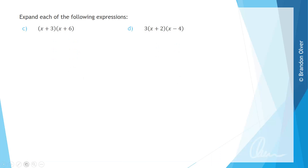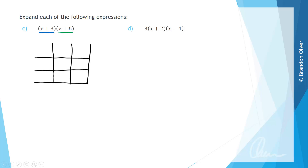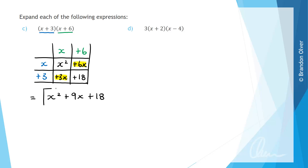Next we're going to look at expanding when there are two brackets present. For part c we have x plus 3 multiplied by x plus 6, so we need to multiply x plus 3 by all terms in the second bracket. Setting up the grid with two terms on each side, we get: x times x is x squared, x times positive 6 is plus 6x, positive 3 times x is plus 3x, and positive 3 times positive 6 is positive 18. Collecting like terms, plus 3x and plus 6x combine, giving the final answer x squared plus 9x plus 18.